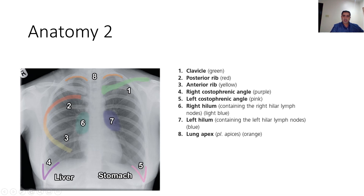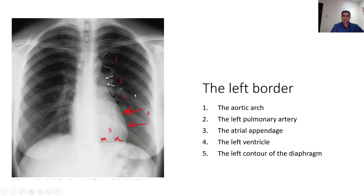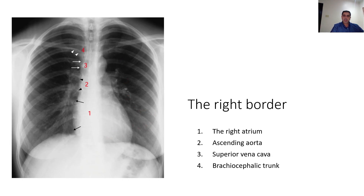Other landmarks include the right and left costophrenic angles, the right and left hilar regions, and the apices of the lung. The left border is composed of the aortic arch, the pulmonary artery, the atrial appendage, the left ventricle, and the left contour of the diaphragm. It's important to keep in mind that these anatomical landmarks are not all present in neonatal X-rays, but you should be familiar with them when reading adult or older children X-rays.